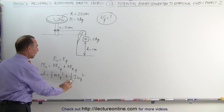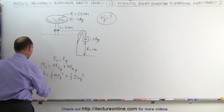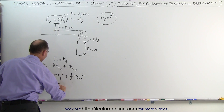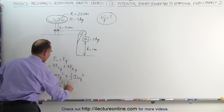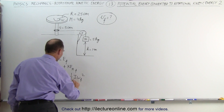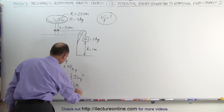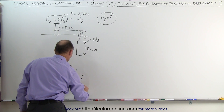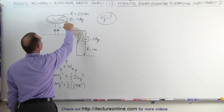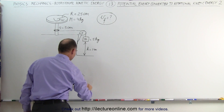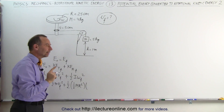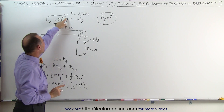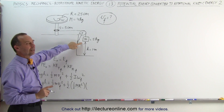Next we plug in what I and ω_final are equal to. MGH equals one-half M·V_final² plus one-half times the moment of inertia of a rotating disc, which is one-half times the mass of the disc — notice it's a different mass than the mass of the falling object — times R², where capital R indicates the radius of the rotating disc. Times ω_final. Now, ω_final can be written in terms of the tangential velocity of the disc, but that's not the same as the velocity of the falling mass.